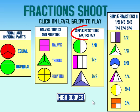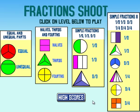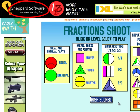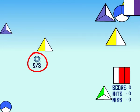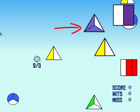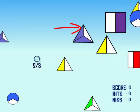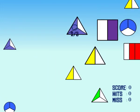Now you're ready for the advanced levels of fractions shoot at ShepardSoftware.com. I'm looking for two-thirds. That means two of three equal parts. This shape has three parts and two of them are highlighted. That's the one. I click and score.